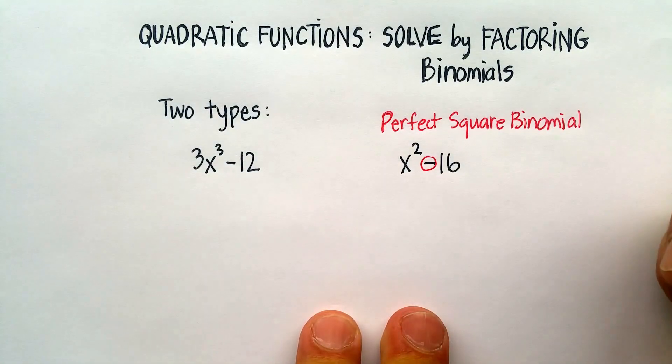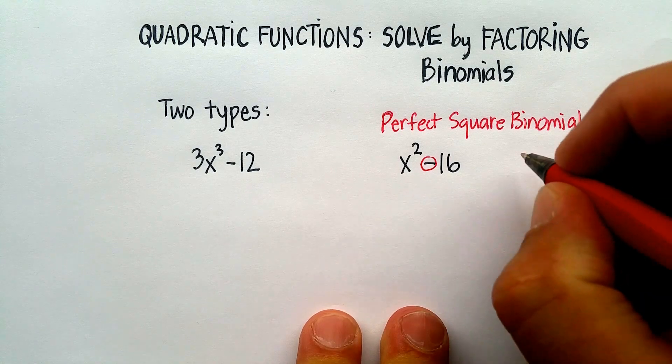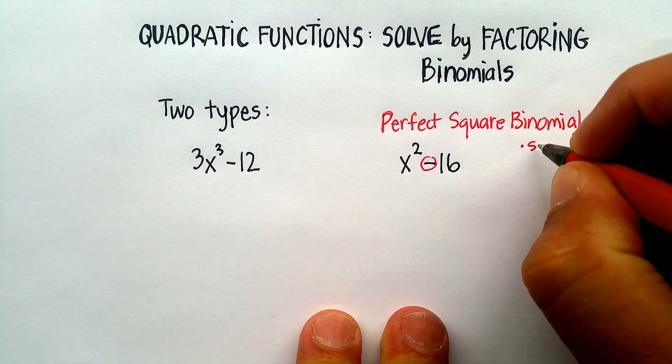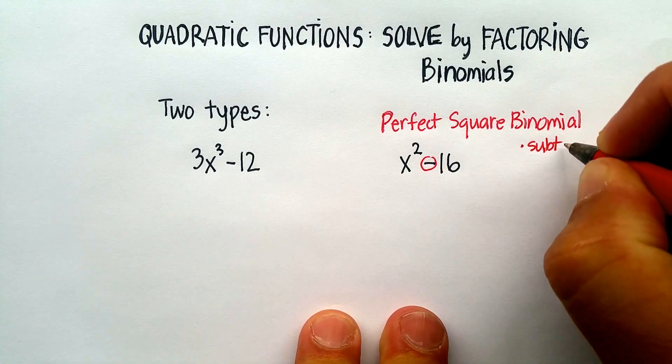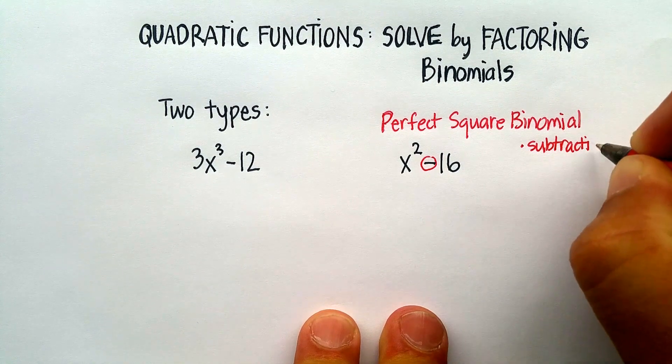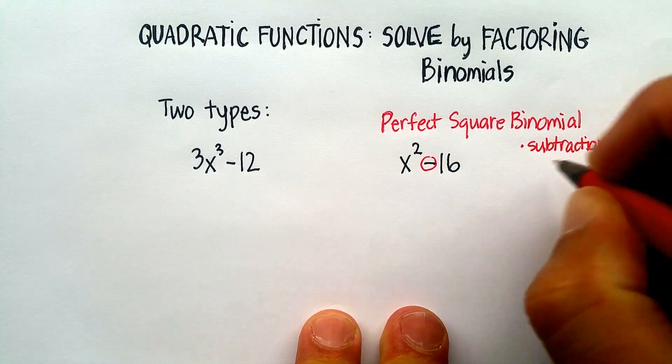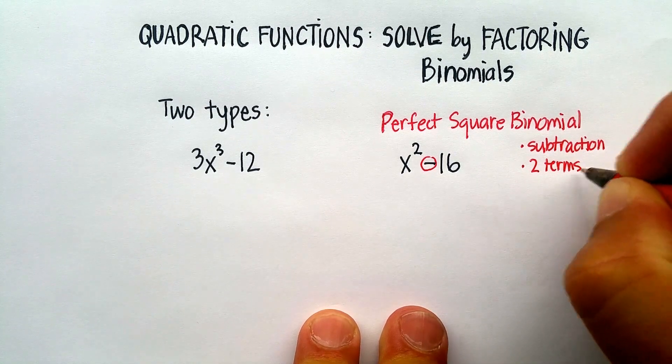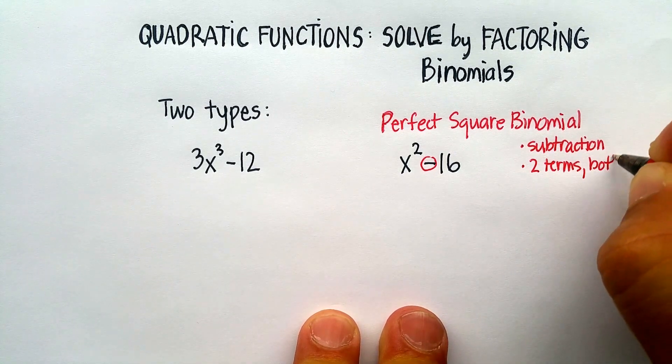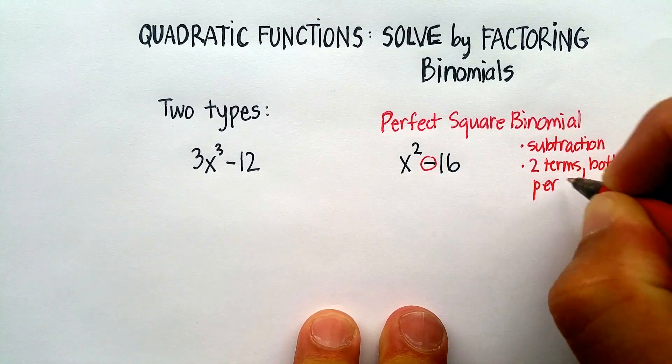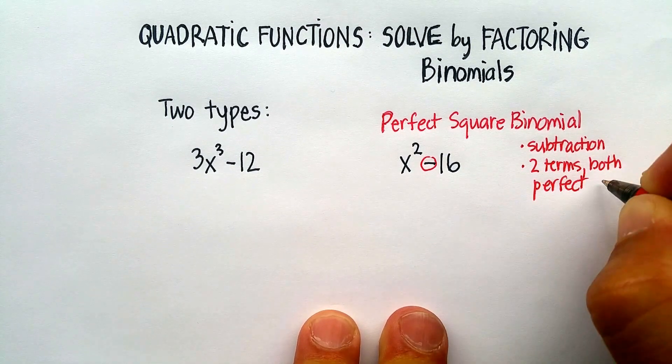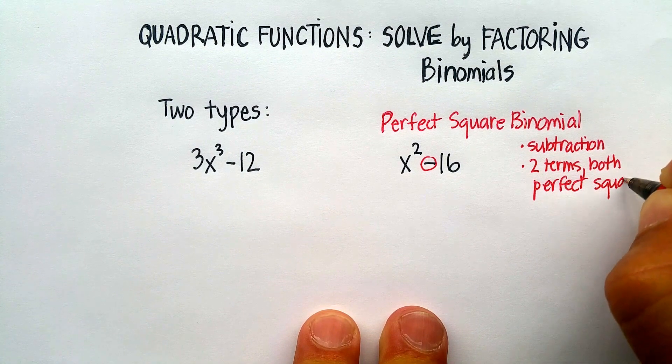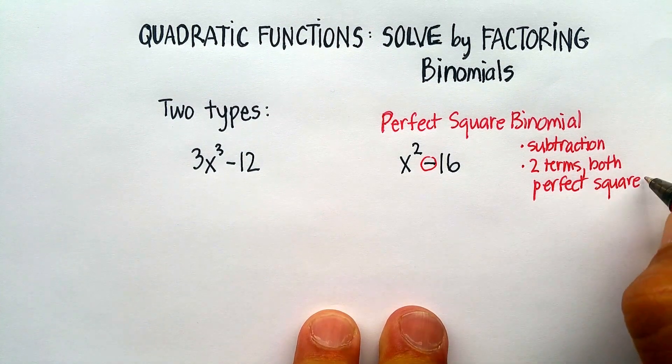Here's the other characteristic of a perfect square binomial: it needs to be separated by a subtraction sign. It needs to have two terms both perfect squares. If you have that, then you can actually factor this pretty quickly and pretty easily.